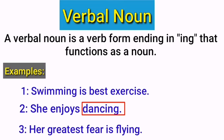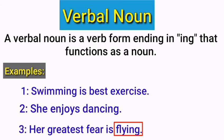Her greatest fear is flying. The word 'flying' is a verbal noun because this word functions as a complement. It completes the meaning of the subject 'her greatest fear.' If I ask you what the greatest fear of her is, you would answer 'flying.' So it is called in grammar a verbal noun.